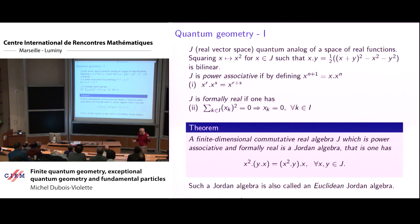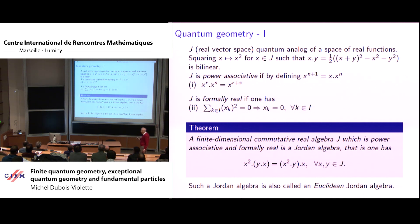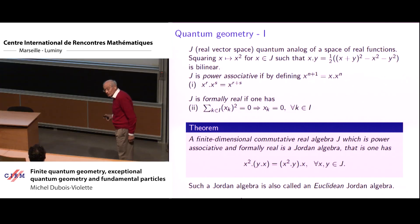To have good real spectral theory you need that if a sum of squares is zero then each element is zero — this is called the formally real condition. It is a theorem, I think first due to Jordan, that a finite-dimensional commutative real algebra which is power associative and formally real is a Jordan algebra, satisfying the Jordan identity. Jordan algebras satisfying the formally real condition are called Euclidean Jordan algebras.